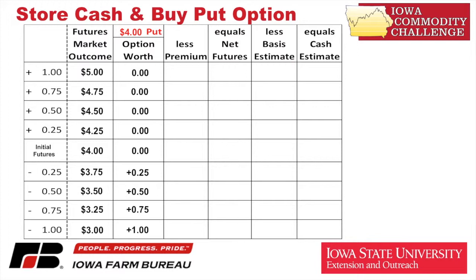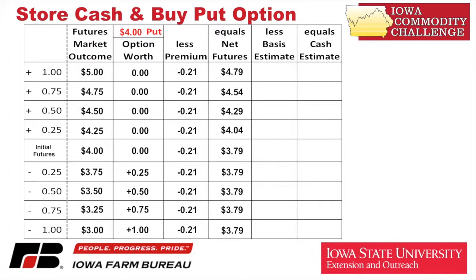Just like car insurance, I've got to factor in that premium regardless of what happens to the market. I paid my premium for price insurance and I subtract 21 cents in all market outcomes. That gives us the net futures column. For example, at $3.50 I gain 50 cents from the option, subtract the 21-cent option premium, and get $3.79 as my futures price floor. On the upside you can see that price increases — at five dollars, with zero option value, I lose only the premium and get $4.79. Now I need to relate this all the way back to the farm gate, to the cash market in the Iowa Commodity Challenge, which is a central Iowa cash market at Bondurant.